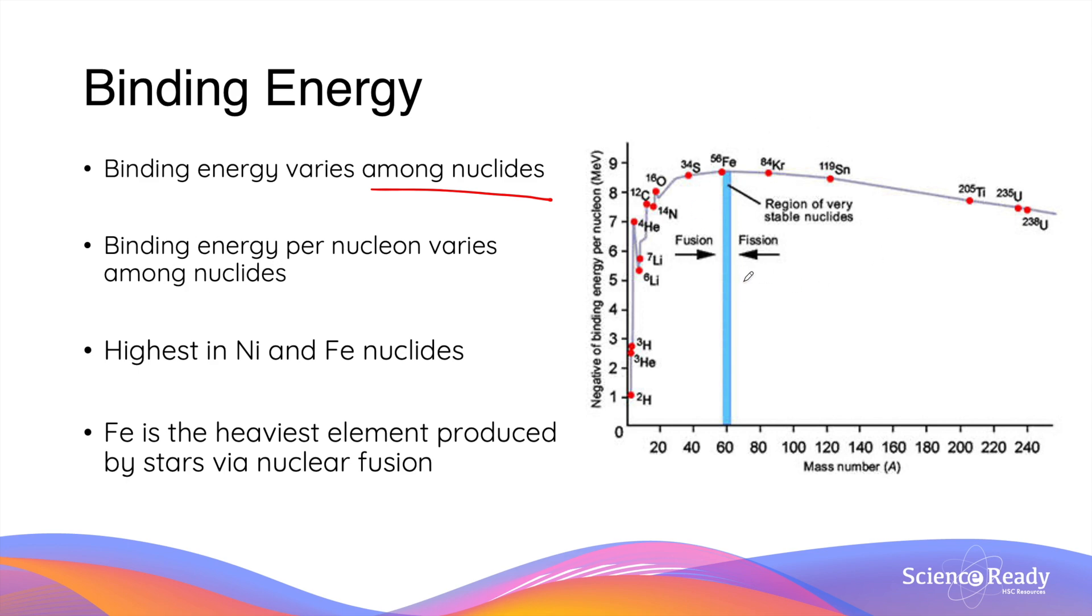This graph on the right-hand side shows the difference in binding energy per nucleon among different nuclides. What you should know is that nickel and iron are considered the most stable nuclides because they have the greatest binding energy. This is also the reason why iron is the heaviest element produced by nuclear fusion in stars. Elements larger than iron have lower binding energy.